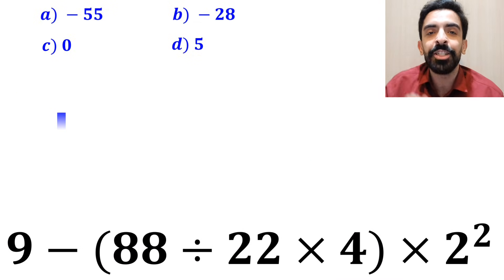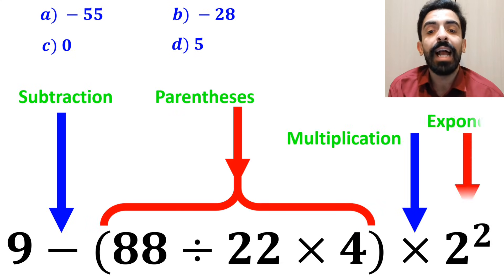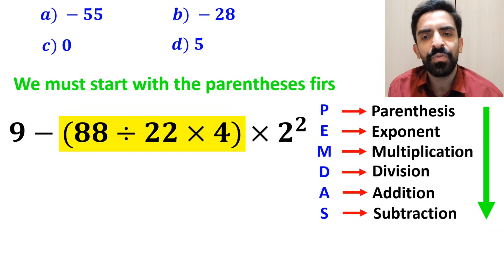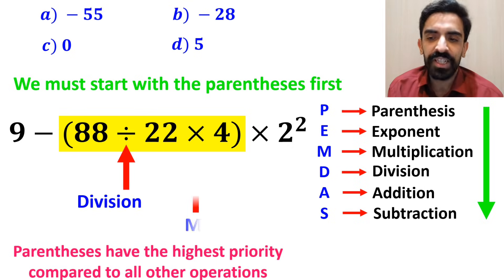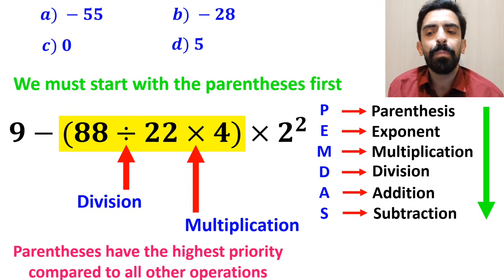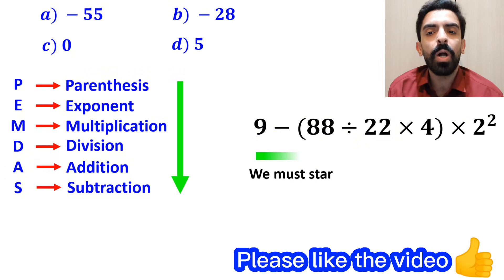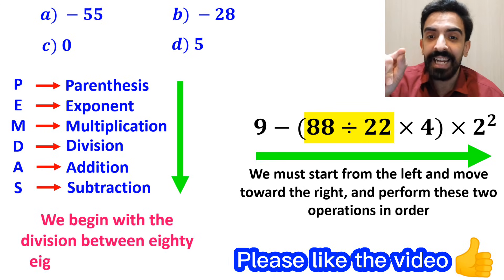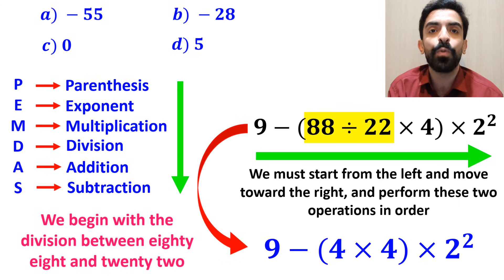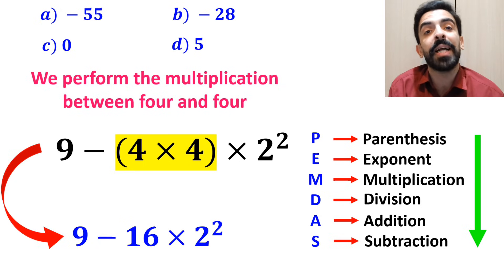As you can see in the image, in this expression we first have a subtraction sign, then parenthesis, after that a multiplication sign, and finally an exponent. So we must start with the parenthesis first, because parenthesis have the highest priority. Inside the parenthesis, we first have a division sign and then a multiplication sign. It's very important to remember that multiplication and division have the same level of priority. In this situation, we must start from the left and move toward the right. So we begin with the division between 88 and 22, and this expression simplifies to 9 minus (4 times 4) multiplied by 2 squared. Then we perform the multiplication between 4 and 4 and write this expression as 9 minus 16 multiplied by 2 squared.